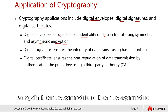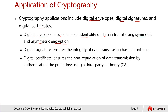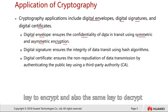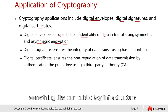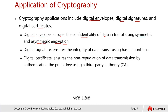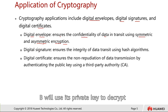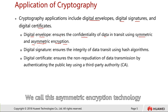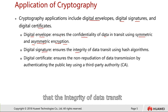Symmetric encryption means both parties use the same key to encrypt and decrypt. Asymmetric encryption, like public key infrastructure, works differently: if A wants to send to B, A uses B's public key to encrypt, and B uses his private key to decrypt. This is called asymmetric encryption technology. Digital signatures ensure the integrity of data in transit using a hash algorithm.